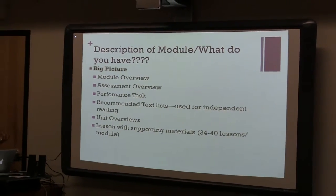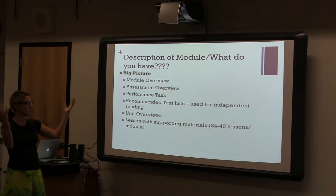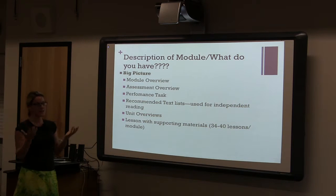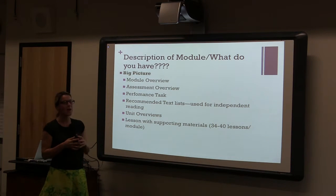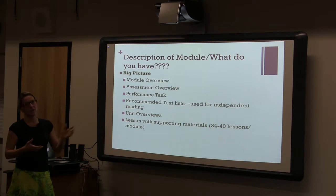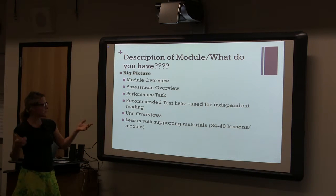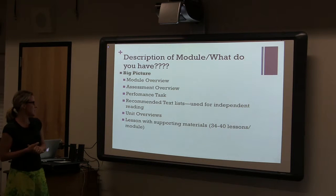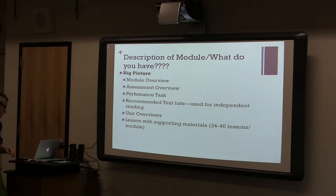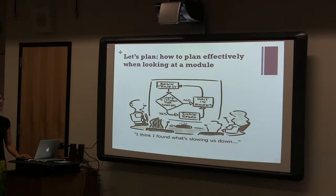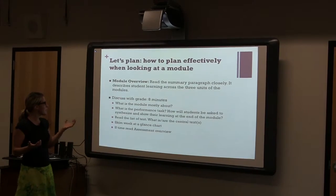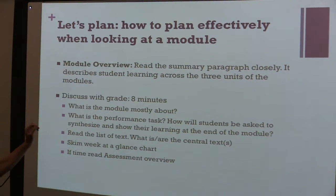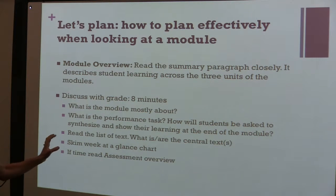When you get a module, it includes a module overview — a synopsis of what's going to happen — an assessment overview for each assessment, an overview of the performance task, and a recommended text list. That list isn't meant for you to order all those books; it just identifies books with a common theme at a variety of Lexile levels. There are also unit overviews specific to each unit, plus 34 to 40 lessons with supporting materials. When planning, start by looking at the module overview: what is the module mostly about, what is the performance task, how will students synthesize their learning, what is the anchor text, and skim the week-at-a-glance.